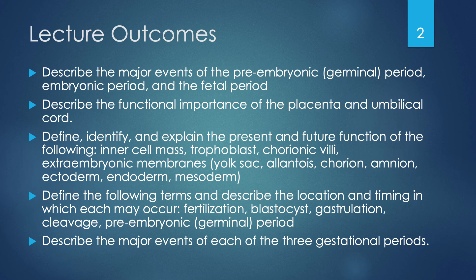The learning outcomes for today's lecture include: to describe the major events of the pre-embryonic or germinal period, the embryonic period, and the fetal period; to describe the functional importance of the placenta and the umbilical cord; to define, identify, and explain the present and future function of the inner cell mass, the trophoblast, chorionic villi, the extra-embryonic membranes including the yolk sac, allantois, chorion, amnion, ectoderm, endoderm, and mesoderm.